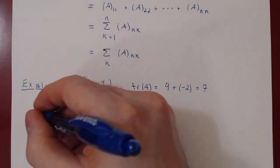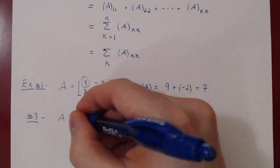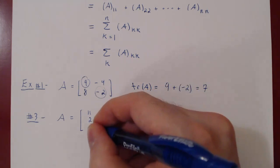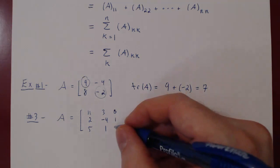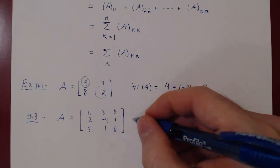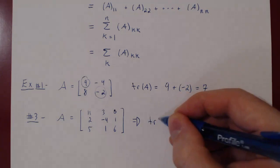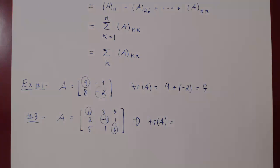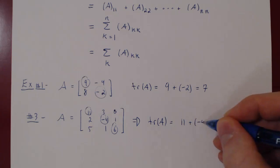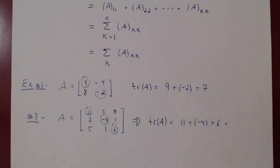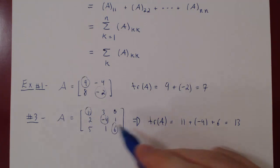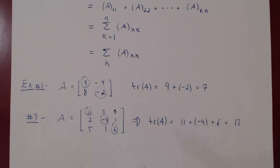What if A were a 3 by 3 matrix: 11, 3, 0, 2, minus 4, 1, 5, 1, 6? The trace of A again is the sum of the diagonal entries: 11, negative 4, 6. So it is 11 plus negative 4 plus 6. Well, 11 minus 4 is 7, plus 6 is 13. And that is the trace of this matrix. Numerically, the trace is very simple — add the entries on the main diagonal and you have the trace of A.